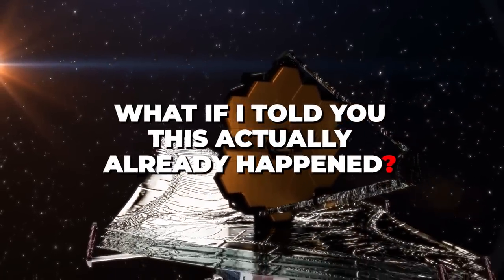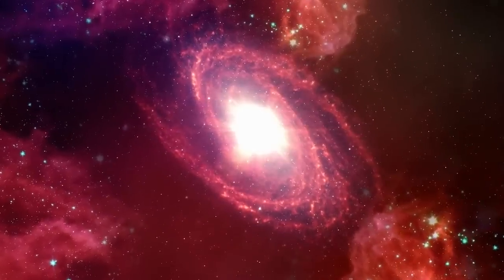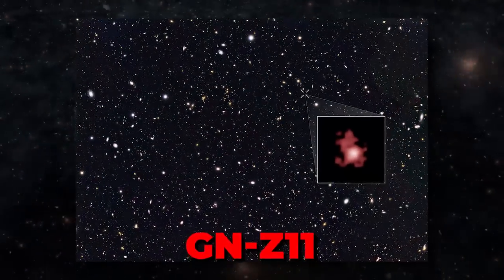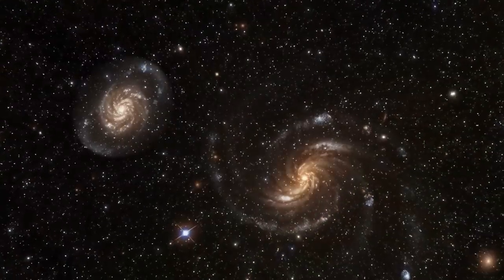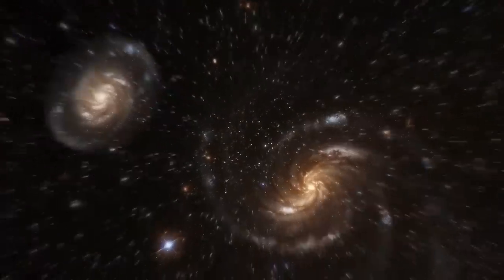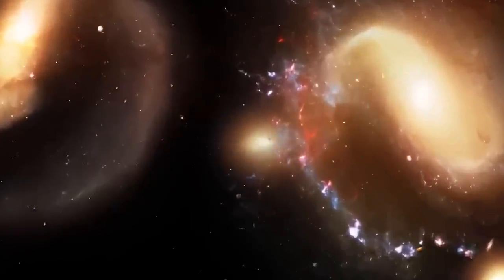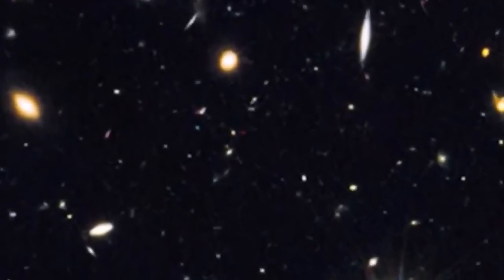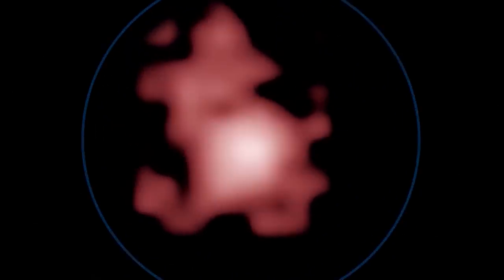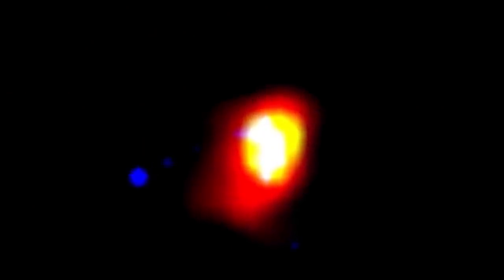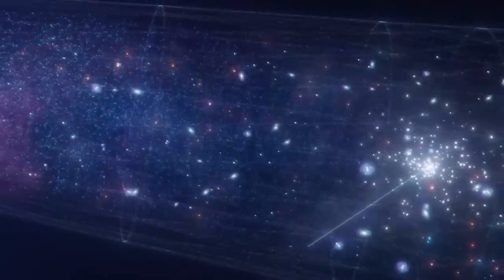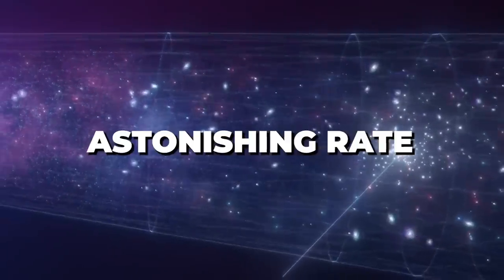But what if I told you this actually already happened? Ancient galaxies have already been found in their name GNZ11 and GNZ1. They are so distant that their light has taken nearly the entire age of the universe to reach us. These galaxies serve as time machines, allowing us to glimpse at the universe when it was less than a billion years old. GNZ11, located in the constellation of Ursa Major, is a unique galaxy. Despite its ancient age, it's surprisingly bright and large, with the star formation rate about 20 times greater than that of our own Milky Way. This tells us that even in the early universe, galaxies were capable of producing stars at an astonishing rate.